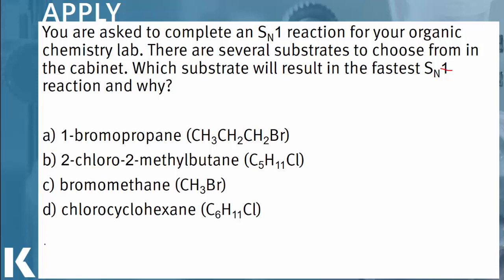For answer choice A, we have 1-bromopropane: three carbons and a bromine atom. Since our leaving group is attached to the carbon at the end, the carbocation will form there. Examining that carbon, it is attached to one other carbon and two hydrogens — this is a primary carbon, meaning it only has electron density support from one carbon atom. Primary carbocations are not good candidates for SN1 substrates, so A is incorrect.